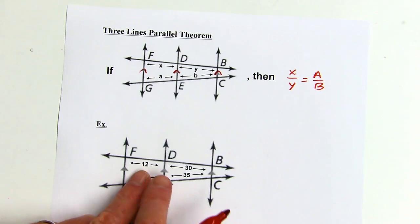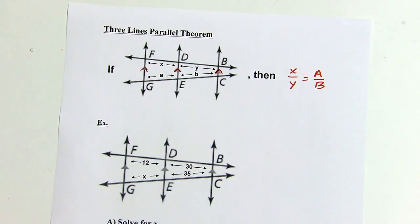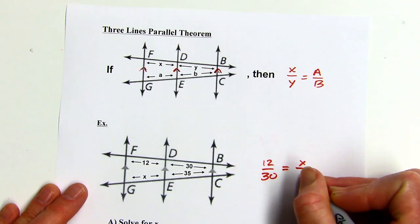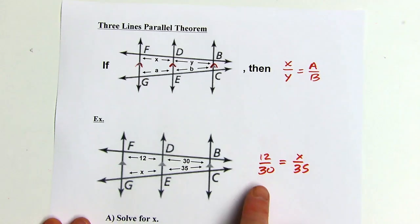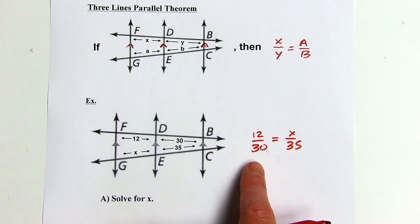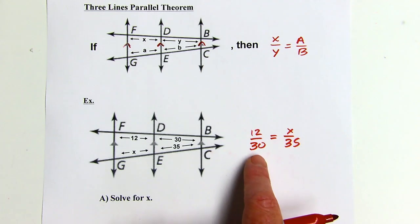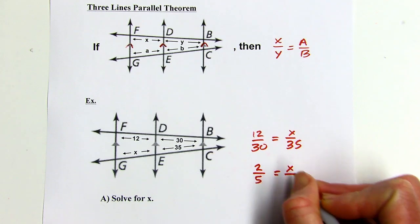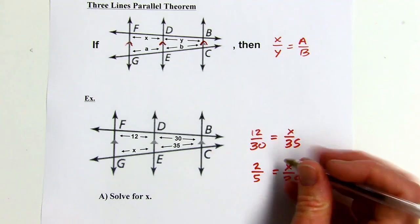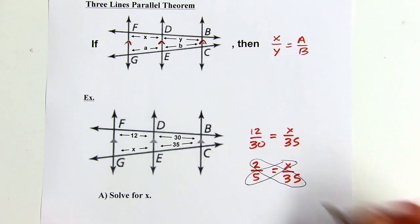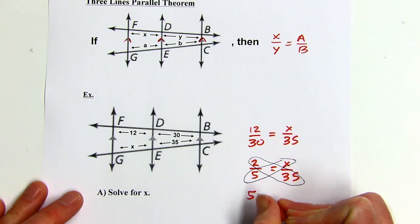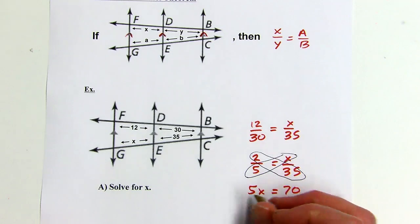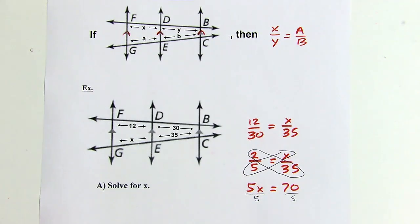In this example: 12 is to 30 as x is to 35. I'll reduce the fraction first — dividing top and bottom by 6 gives 2 over 5. Cross multiplying gives 5x equals 2 times 35, which is 70. Dividing by 5 gives x equals 14.